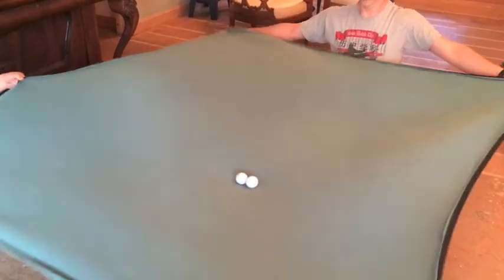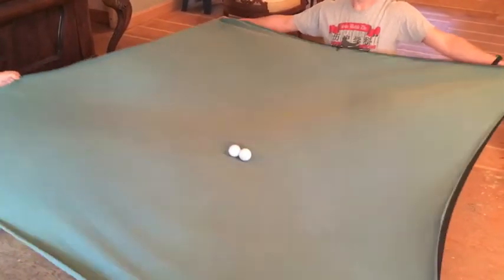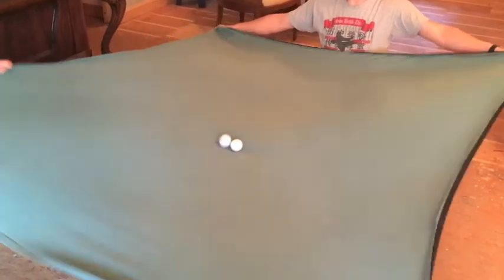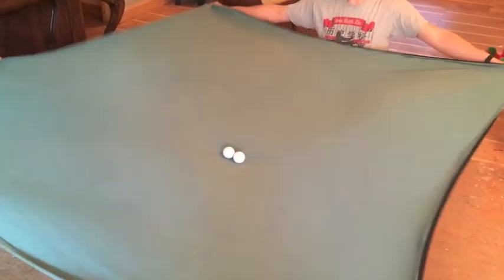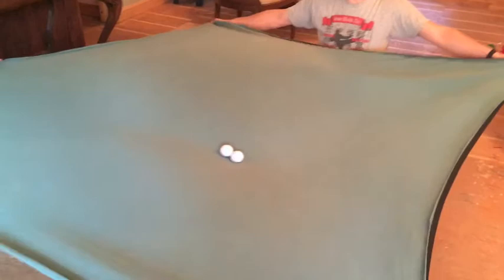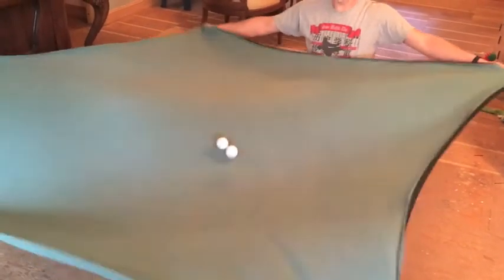The fact that the golf balls don't occupy the same spot on the blanket is a good representation of how the Pauli Exclusion Principle works.